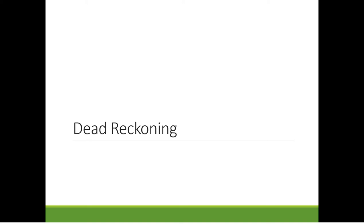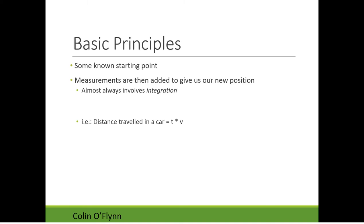One way you can use sensors is this dead reckoning system. Basically, we start at some known point and we have measurements of how far we've traveled — it's always based on our own measurements. It almost always involves what we call integration, which in this context just means doing the addition of how far we've traveled. So if you know your velocity, you integrate that to get your position.